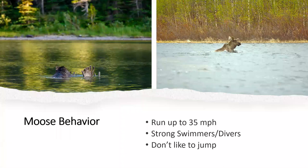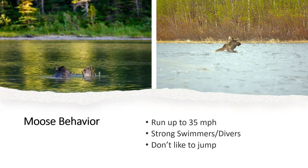They can run up to 35 miles per hour for shorter distances, and for longer periods they can still do 20 miles an hour at a trot. They're really strong swimmers — up to about six miles per hour for up to two hours at a time — and can swim almost 12 and a half miles in one go. One of my favorite adaptations is that they can close their nostrils, which comes back to their ability to graze underwater. They can stay underwater for up to 30 seconds and dive for plants in water over 18 feet deep.